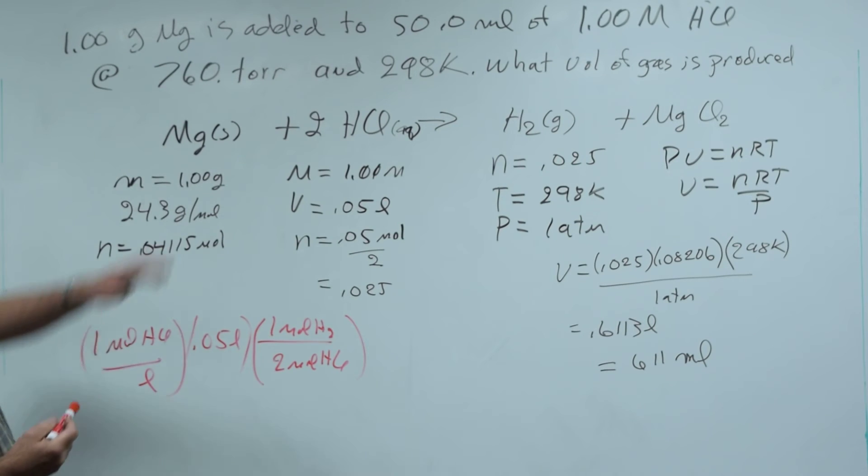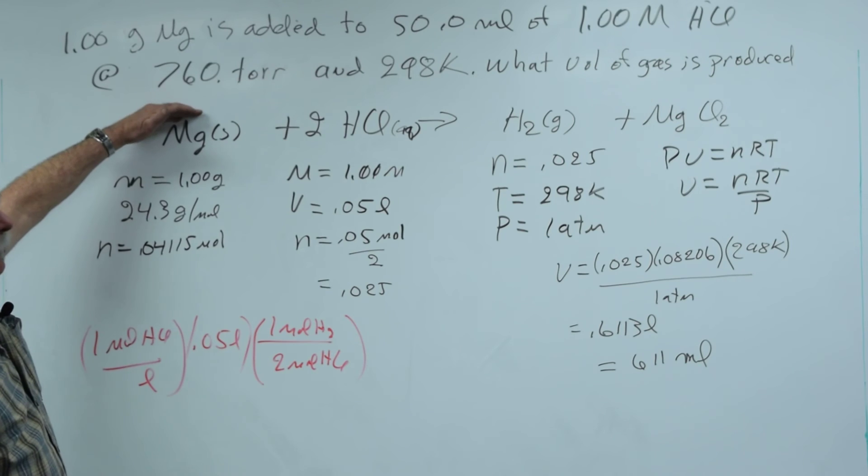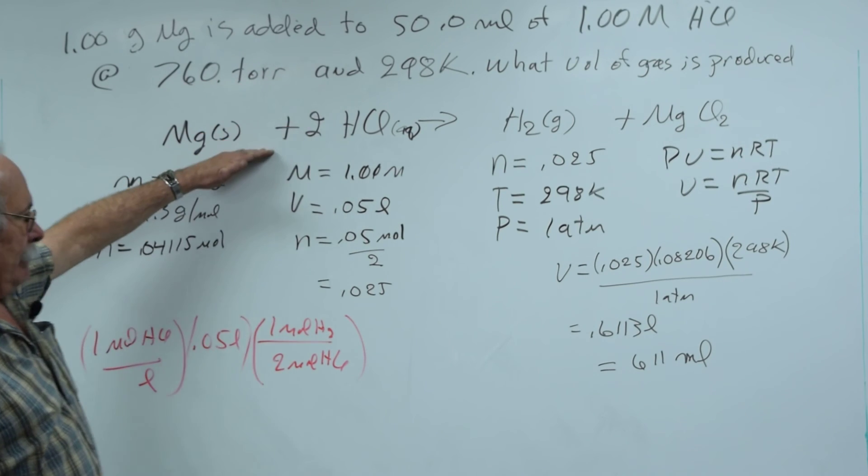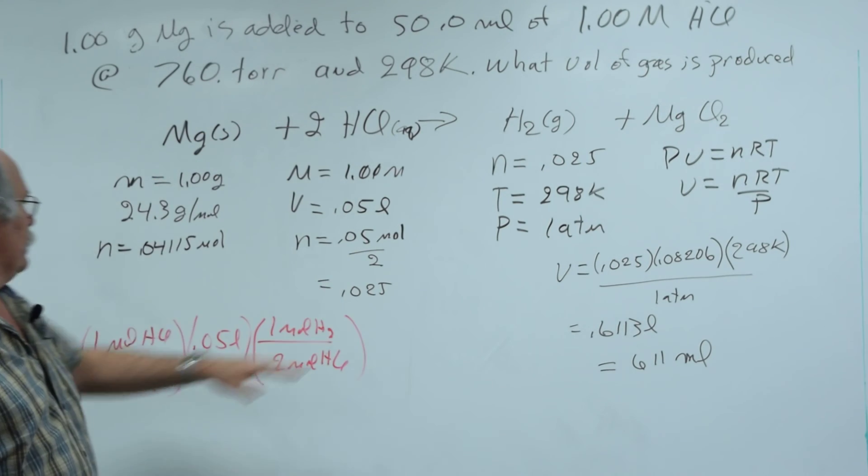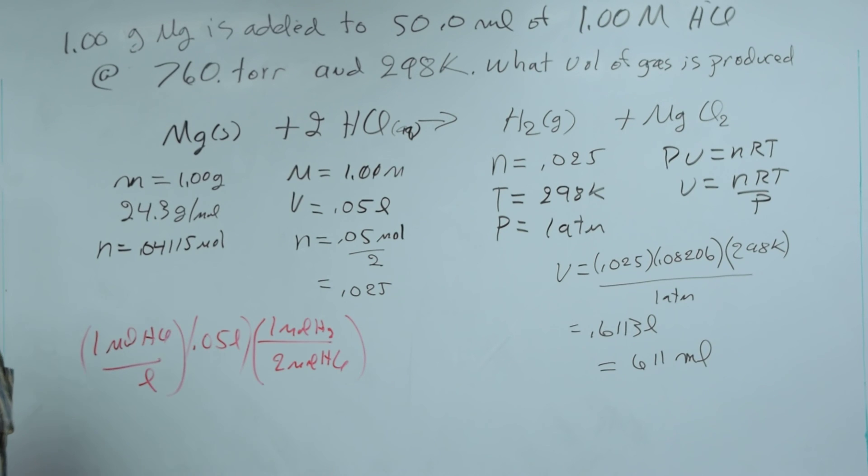Remember that the whole strategy, if you have a limiting reagent, is calculate the moles of your reactants, divide by the coefficient, the smallest number is the limiting reagent. Thank you.